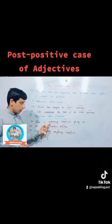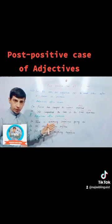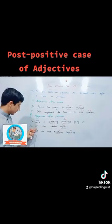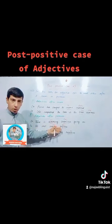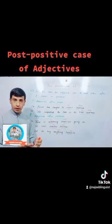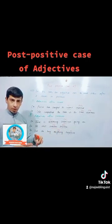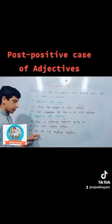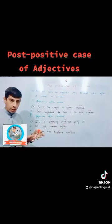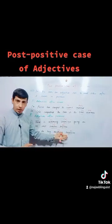In 'there is something suspicious going on,' 'something' is an indefinite pronoun, so the adjective is used after the indefinite pronoun. Example two: 'he met someone popular' — 'popular' is an adjective and 'someone' is an indefinite pronoun. The last example: 'did she buy anything expensive?' — 'expensive' is an adjective and 'anything' is a pronoun, so the adjective is used after the pronoun.